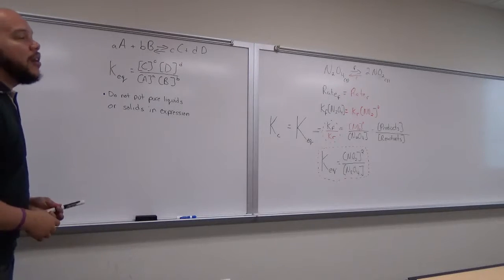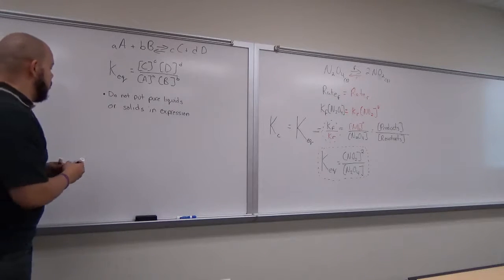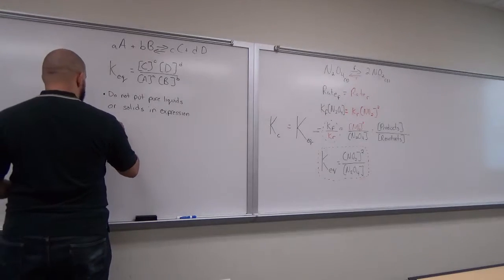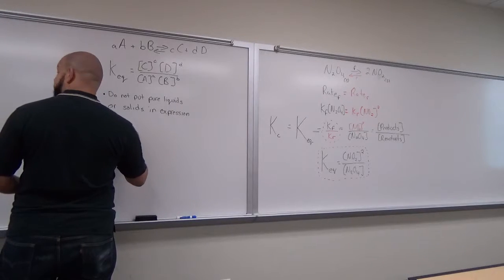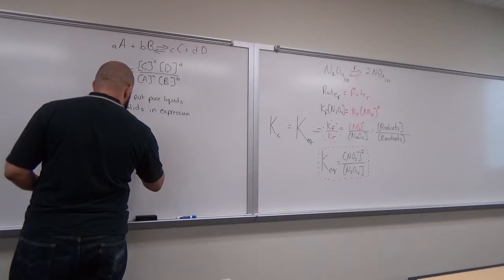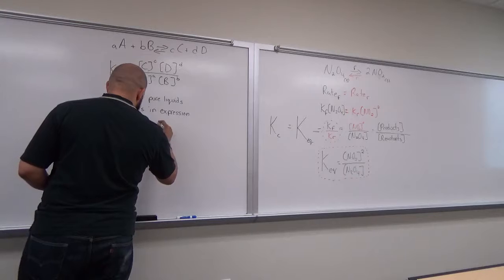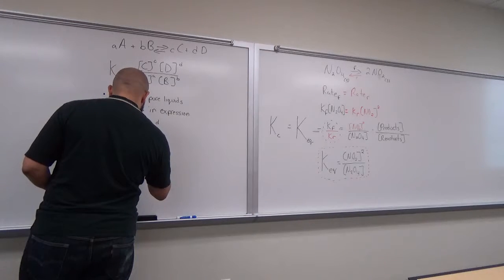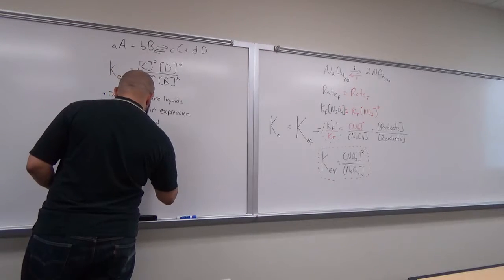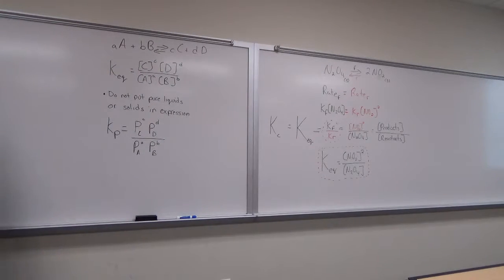Kp is for dealing with the pressures of the gas. So instead of Keq, we can write Kp, and Kp equals pressure of C raised to little c, times pressure of D raised to little d, over pressure of A raised to little a, times pressure of B raised to little b. All pressures just have to be in the same units.